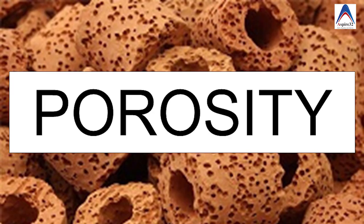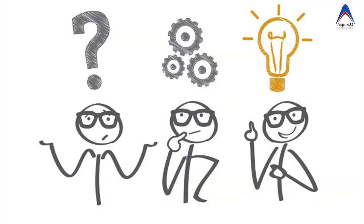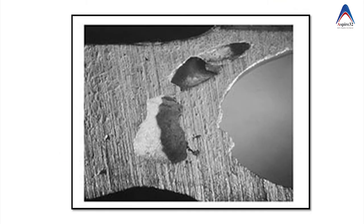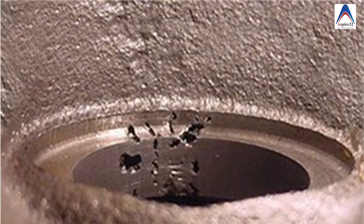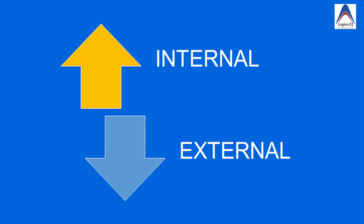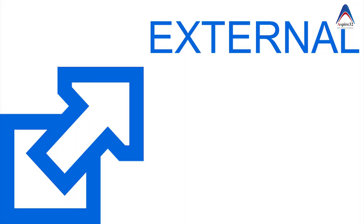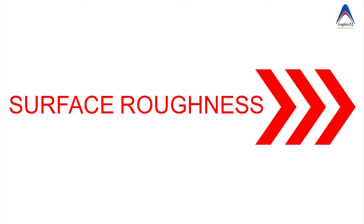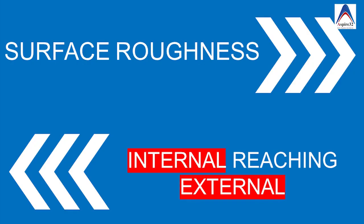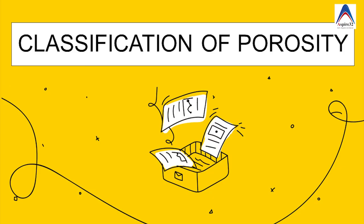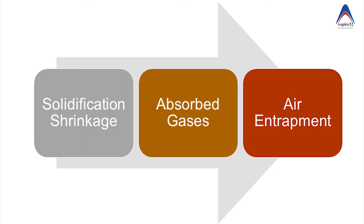Now let's talk about the most important and most commonly asked casting defect: porosity. Porosity means a localized area is devoid of any metal, which reduces the strength of the cast restoration. Porosities can be external or internal. Based on the reasons, porosities are classified into three categories: first, solidification shrinkage; second, absorbed gases; and third, air entrapment.